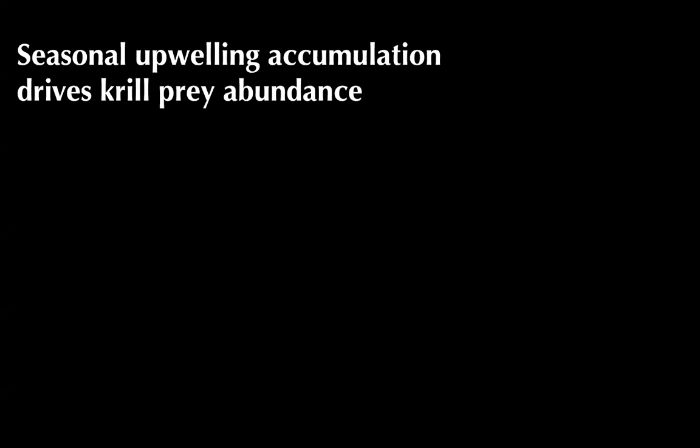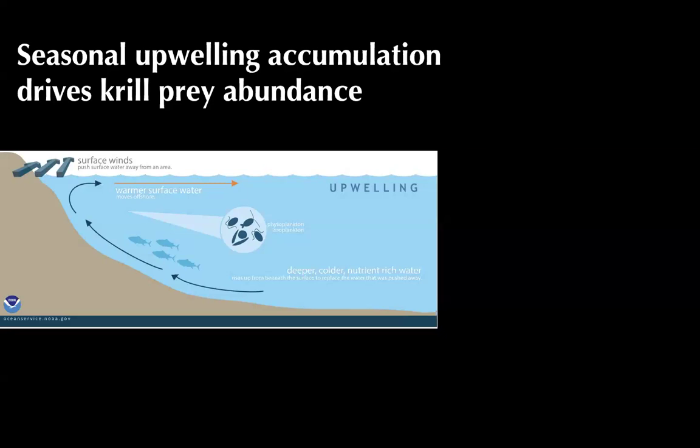This is a very seasonal ecosystem, and the primary process driving that seasonality is oceanographic upwelling. Alongshore surface winds interact with Earth's rotation to drive warmer surface waters offshore, replaced by deep, cold, nutrient-rich upwelled water. When injected into the sunlit surface layer, this creates an explosion of life that propagates up the food web all the way to blue whales, which forage on dense krill swarms in this upwelling region during summer and fall.